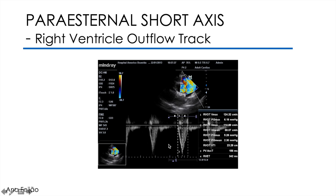I call up the spectral graph by pressing the PW command again. I get a triangular curve, negative because it's a flow away from the probe. It may happen that we have a vertical spike at the beginning of the curve called the closing click, which suggests correct placement of the sample. As before, whenever we activate the spectral graph, it is important to orient the baseline and the velocity scale to visualize the peak of the curve, and orient the gains and filters so the entire spectral curve is well defined. Here I must calculate the peak time — from the beginning of the curve to the peak — and the total ejection time — from the beginning to the end of the curve.